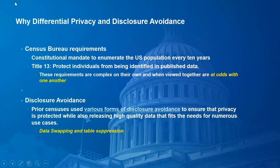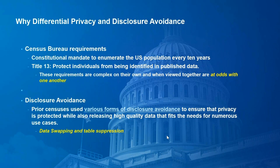The Census Bureau has a constitutional mandate to enumerate the U.S. population every 10 years. Title 13 also protects individuals from being identified in published data. Those two things are both very important and complex on their own, but when you put them together, they're actually in conflict with one another. It's a very difficult challenge. In prior censuses, various forms of disclosure avoidance were used, and there's a lot of documentation online about that.